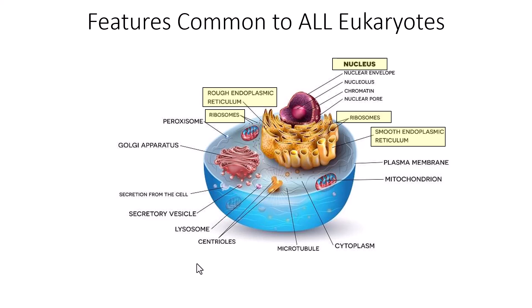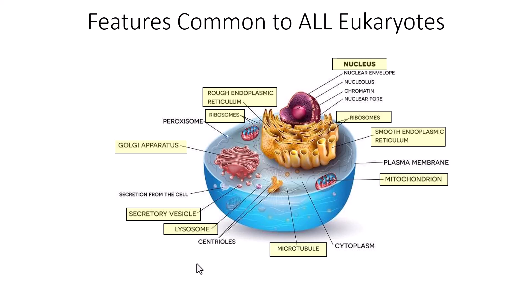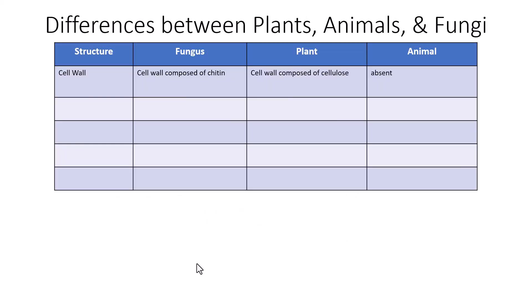All eukaryotes have rough and smooth endoplasmic reticulum, both of which produce the protein and lipid products that eukaryotes need. All eukaryotes contain the Golgi apparatus, secretory vesicles, and vesicles in general. As we'll see in later slides, some contain different types of vesicles and vacuoles, but for the most part all eukaryotes contain secretory vesicles.